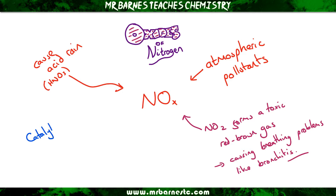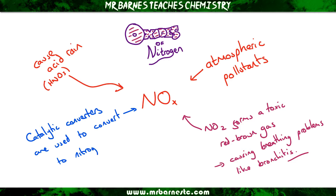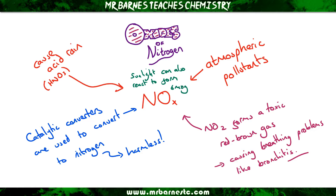What we can do is use catalytic converters. All cars have a catalytic converter in them, and what happens is they convert that nitrogen oxide back into nitrogen, which is harmless and makes up 78% of our air. It's also important to do this because if we don't, the sunlight can react with it to form some sort of smog, which makes visibility very difficult.